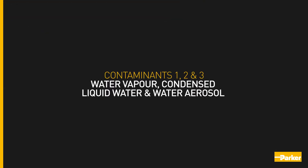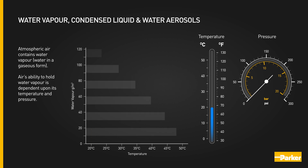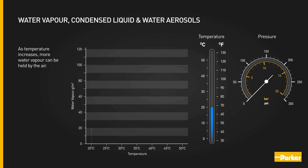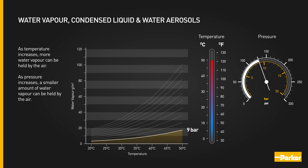Contaminants 1, 2 and 3: water vapour, condensed liquid water and water aerosol. Atmospheric air contains water vapour — water in a gaseous form. Air's ability to hold water vapour is dependent upon its temperature and pressure. As temperature increases, more water vapour can be held by the air. As pressure increases, a smaller amount of water vapour can be held by the air.